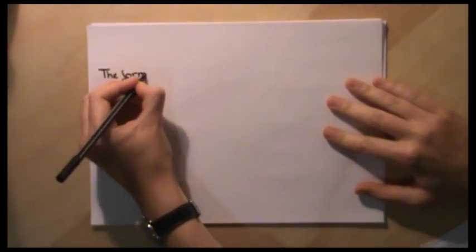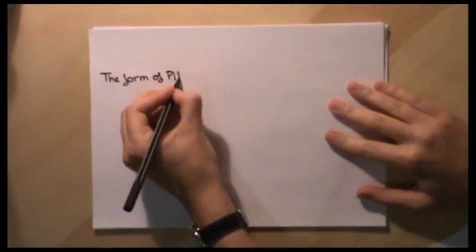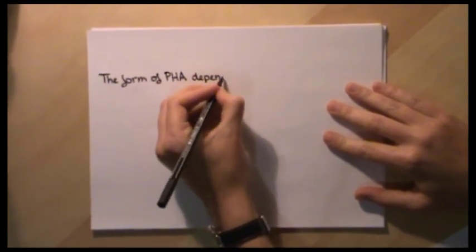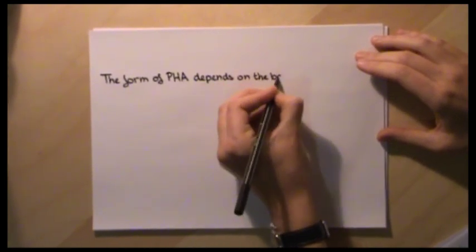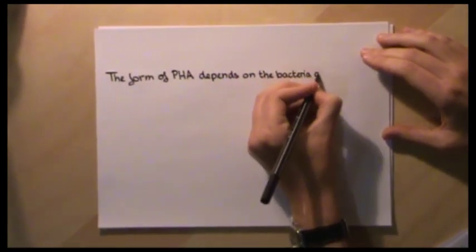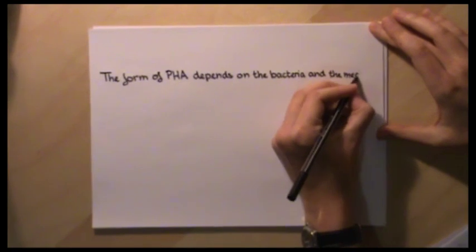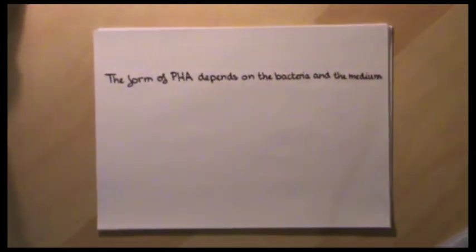The form of PHA, whether it becomes PHB, PHV, PHMV, etc., totally depends on the bacteria and the medium on which it grows.